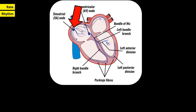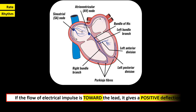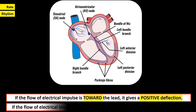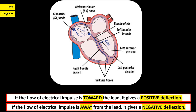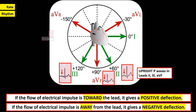The next step is determination of rhythm. The normal pacemaker of the heart is the sinoatrial node. If the impulse is coming from the sinoatrial node, we call that a sinus rhythm — or sinus bradycardia or sinus tachycardia depending on the heart rate. How do we know that the impulse is coming from the sinus node? Go back to the golden rule of ECG reading: if the flow of the electrical impulse is towards the lead, it gives a positive deflection; if it is away from the lead, it gives a negative deflection.